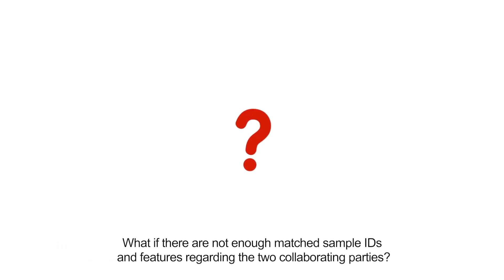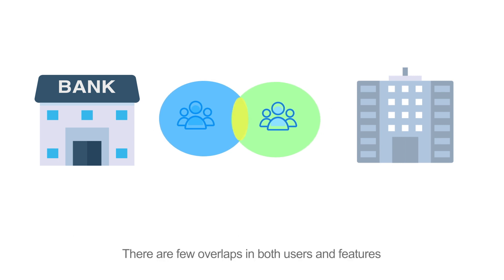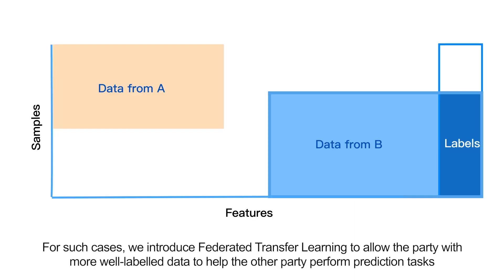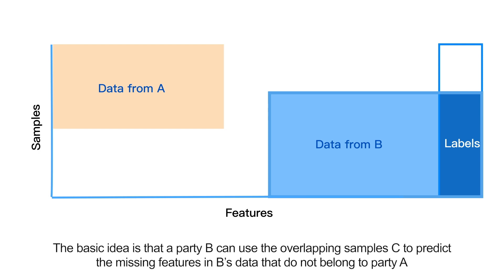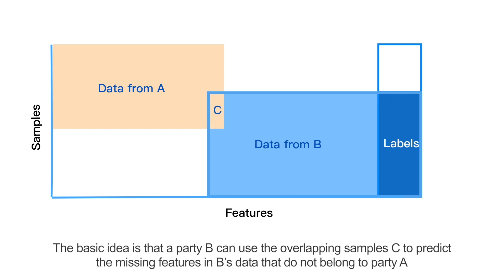What if there are not enough matched sample IDs and features between the two collaborating parties? Suppose there are two parties, one is a bank doing business in China and the other is an e-commerce company doing business in the US. There are few overlaps in both users and features. In such cases, we introduce Federated Transfer Learning to allow the party with more well-labeled data to help the other party perform prediction tasks.